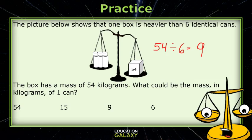But since we know that the 54 kilogram box has a greater mass, the cans must have a mass less than 9 kilograms each. If we look at the answer choices, the only mass less than 9 is 6. So that must be our answer, 6.